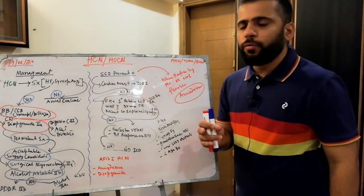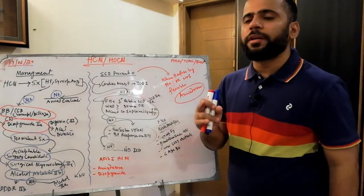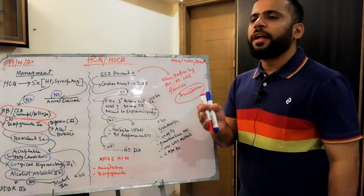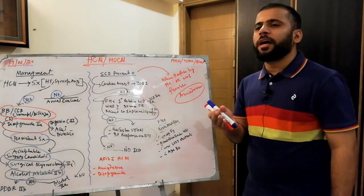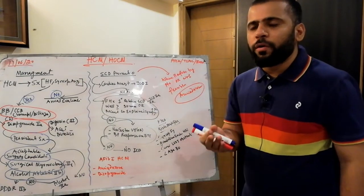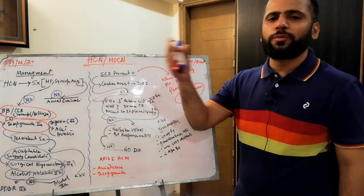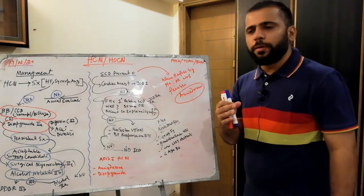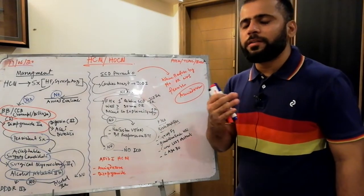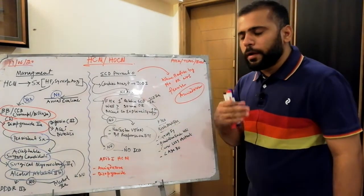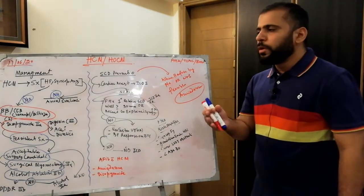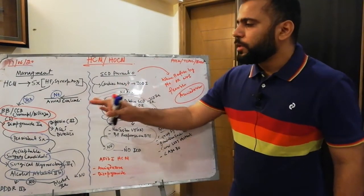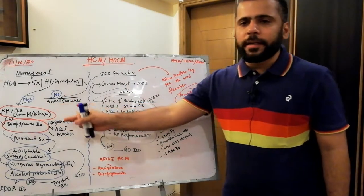You will not give dihydropyridines — they are class 3 because they have a vasodilatory effect, will increase tachycardia, and decrease preload, thereby worsening HCM. Anything that decreases preload or decreases LV volume worsens HCM. That is why you give verapamil and diltiazem, which are non-dihydropyridines.